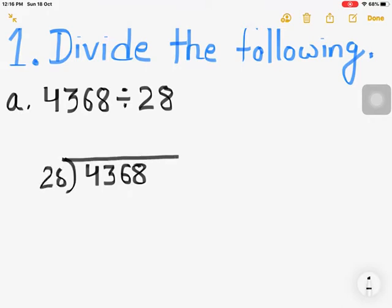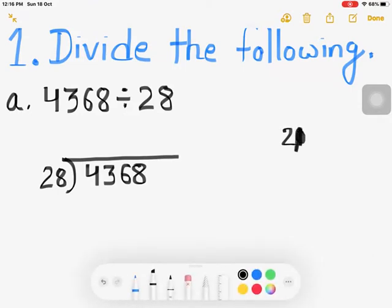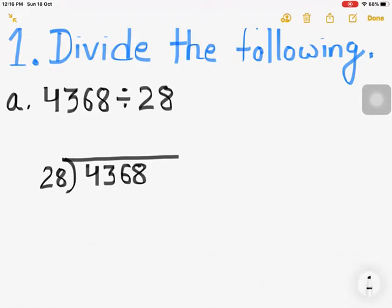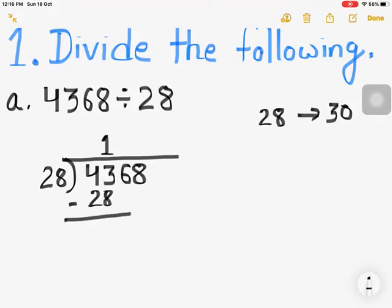If you round 28 to the nearest 10, the nearest 10 is 30. So how many 30s in 43? Of course, one. So 28 times 1 is 28. Subtract and let us find out the remainder. The remainder is 15. Let us bring down another number, 6. Now we have 156.